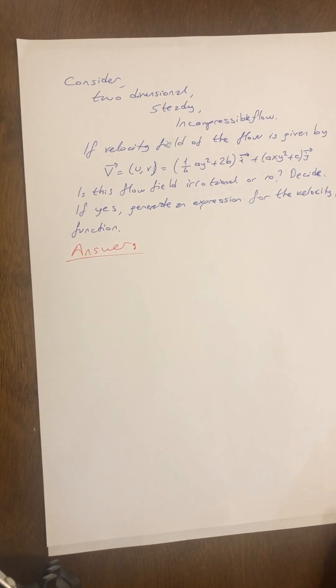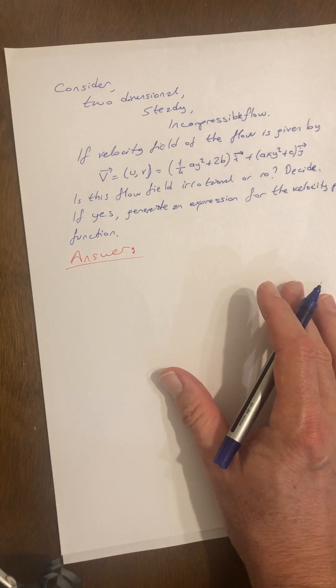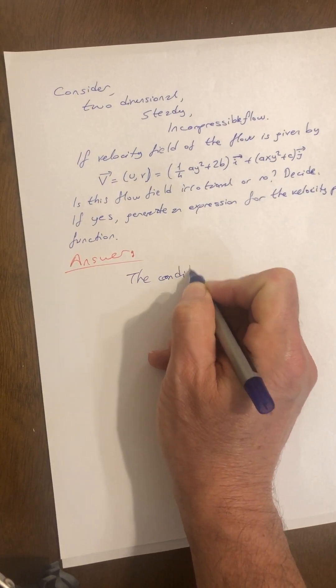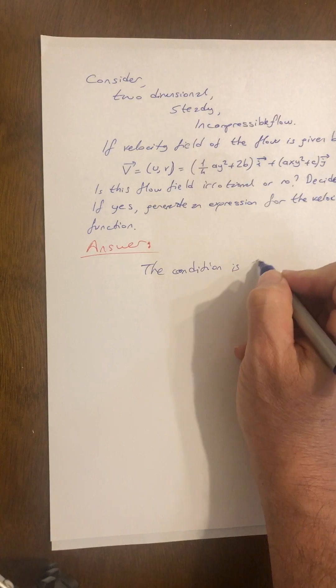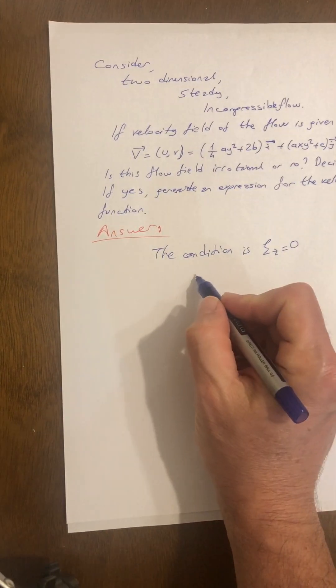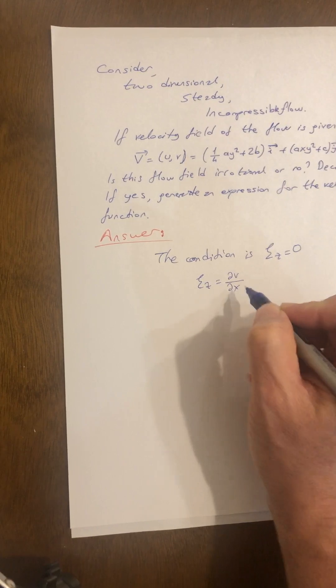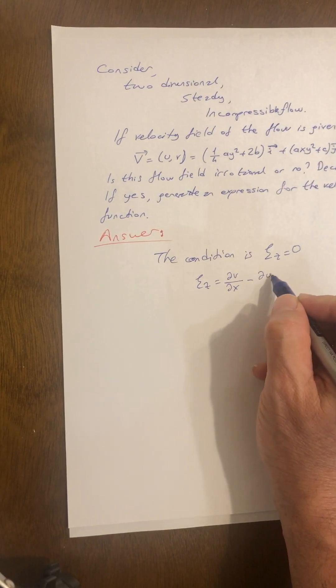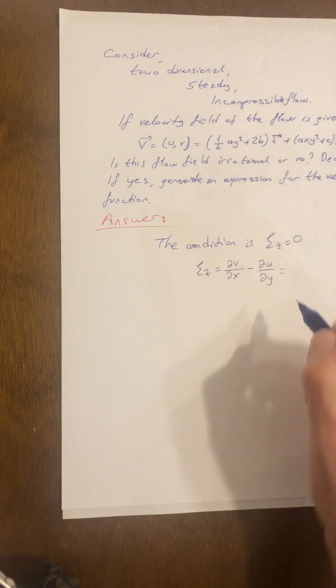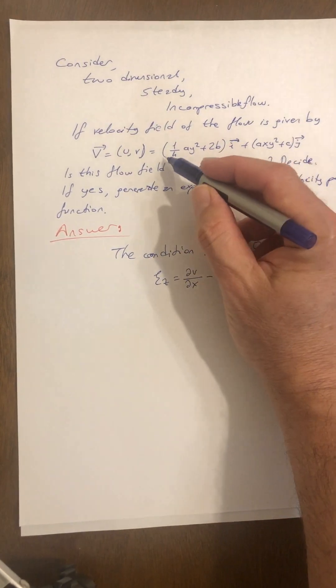Actually to solve this question we must decide the values of vorticity. So if values of vorticity is equal to zero, then we can say that the flow is irrotational. Then the condition is ζ_z equal to zero. Let's write the definition of ζ_z as partial derivative v by x minus partial derivative u by dy.